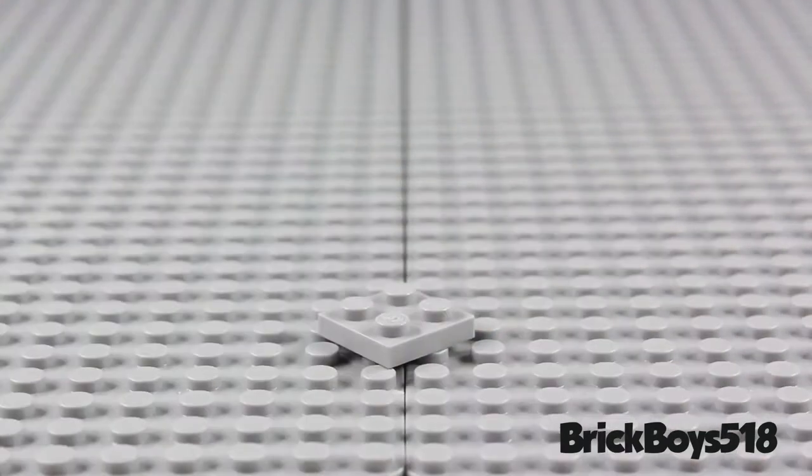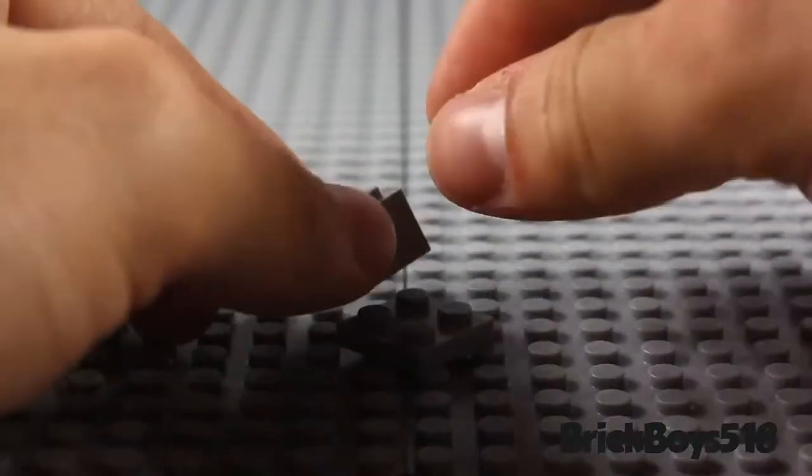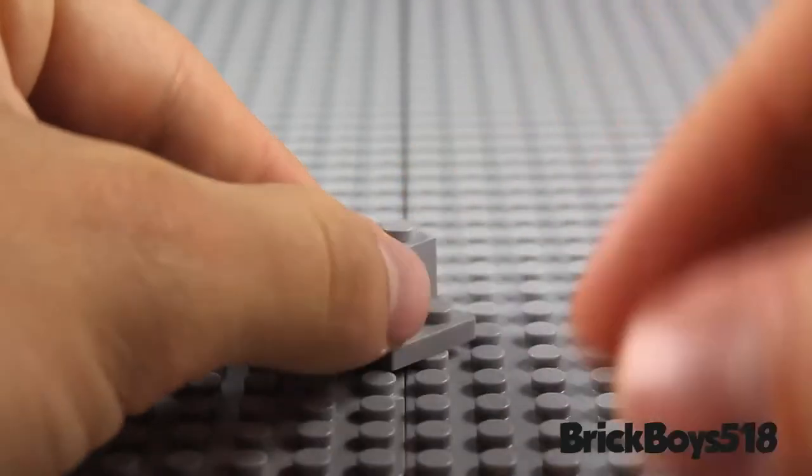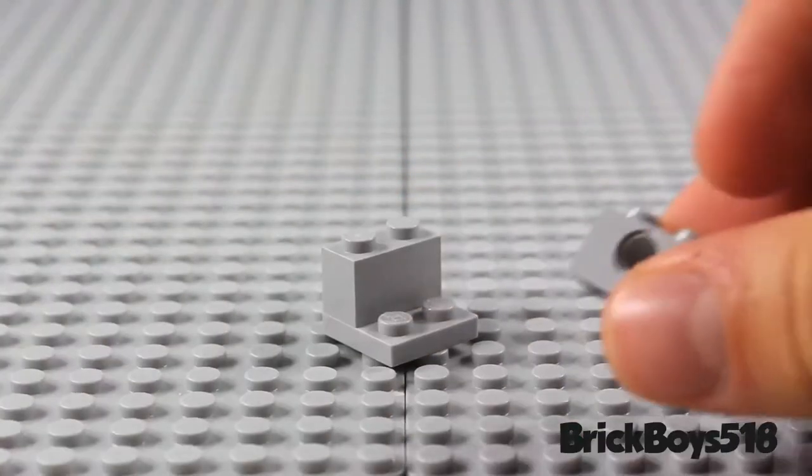So first of all you're going to take a 2x2 plate, and this will be the base of your speaker, and on that you're going to put two bricks. You're going to put a 1x2 brick for the back, and then a 1x2 brick that has been modified for a Technic pin.